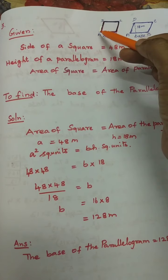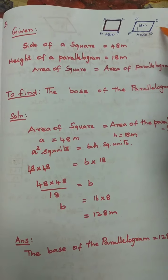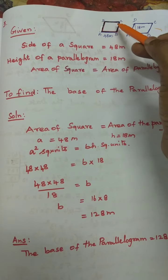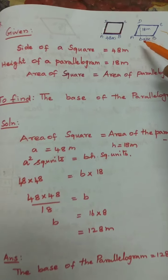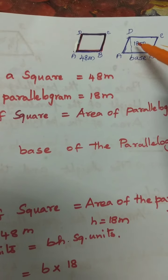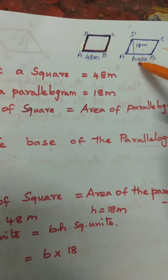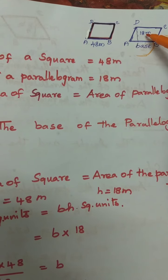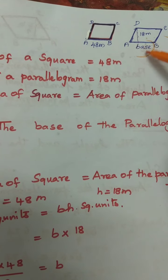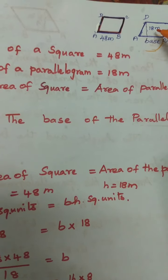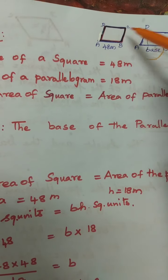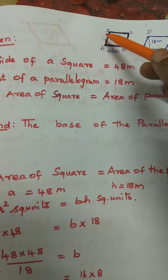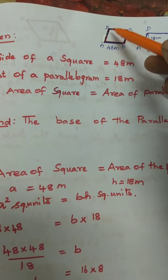Draw the diagram: this is a square, this is a parallelogram. The side given is 48 metres, so all sides are 48 metres. Height is 18 metres; base is unknown. Since both areas are the same, first find the area of the square.